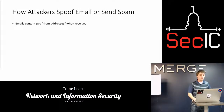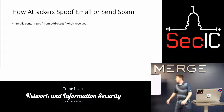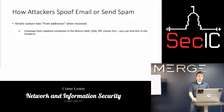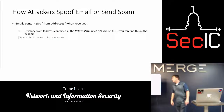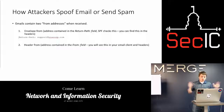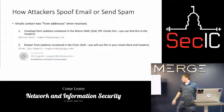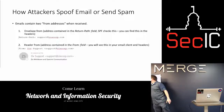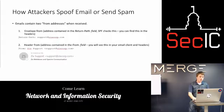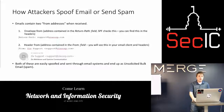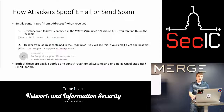So, how do attackers spoof email or send spam? Emails contain two from addresses in the headers when received by the recipient. The first type is called an envelope from — this address is contained in the return path field, and this is what SPF actually checks. You can find this in the headers. The other type is called the header from, located in the from field. You'll see this in your email client and also in the headers. Both of these are easily spoofed and sent through email systems as unsolicited mail — they could be using an open email system or just spoofing it.